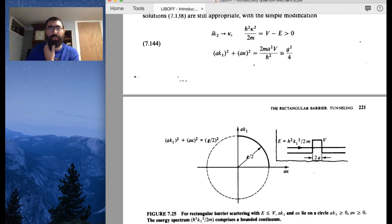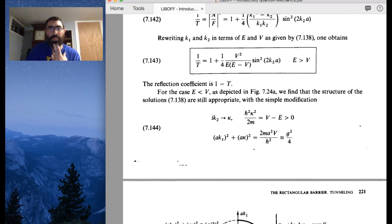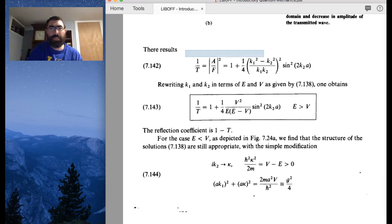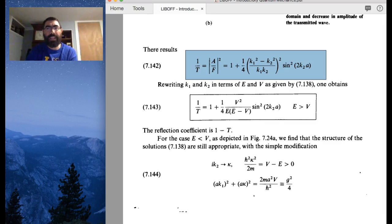So if I look at now, if I go back to my original result for the barrier where the energy is greater than the potential, up here, what we have is k2, if it's k2 squared.